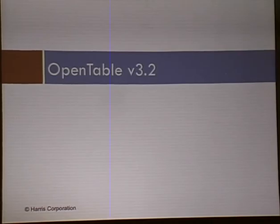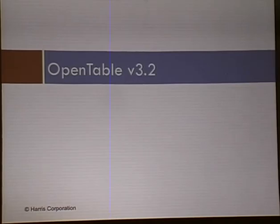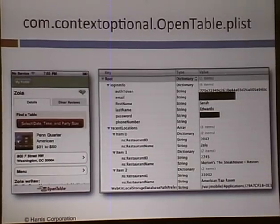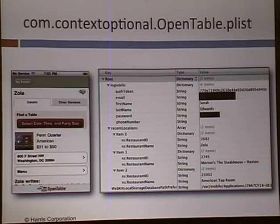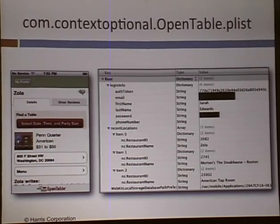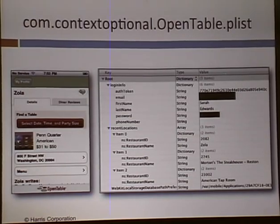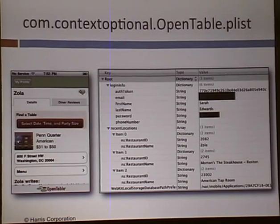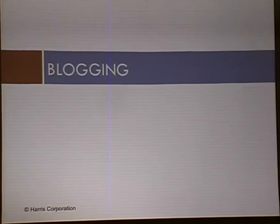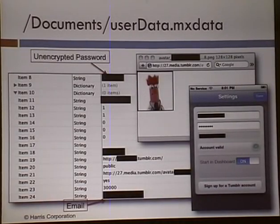OpenTable — right there, username and password. It does give you a history of restaurants you've looked up, which doesn't necessarily say you ate there but it's good information either way. Tumblr — more unencrypted passwords and emails. There's also a link for my avatar. Item 24 is the email address, item 17 is redacted, item 11 is the blog title, item 8 is the password, items 18 and 19 are the URL for the blog.